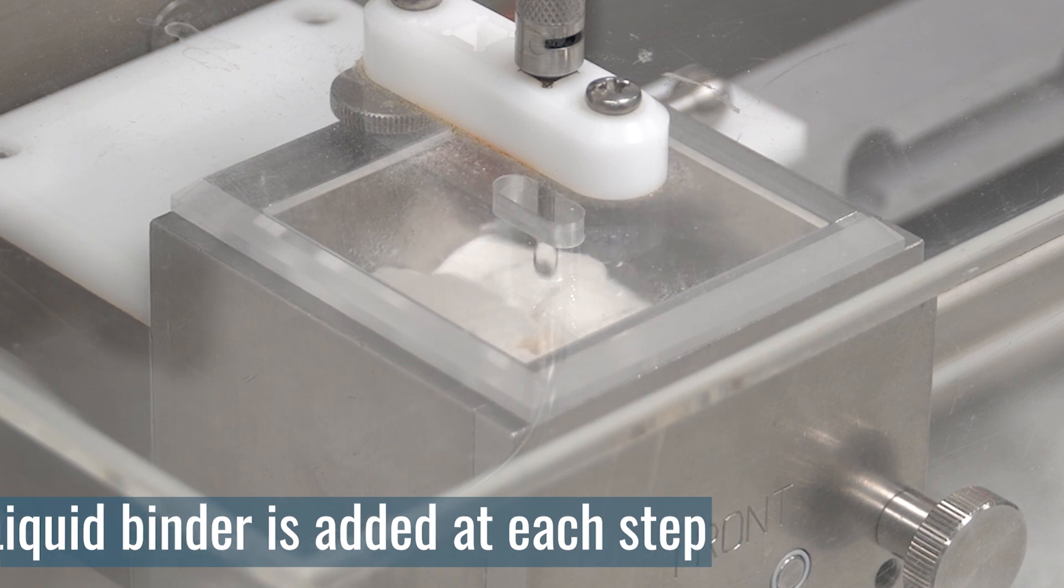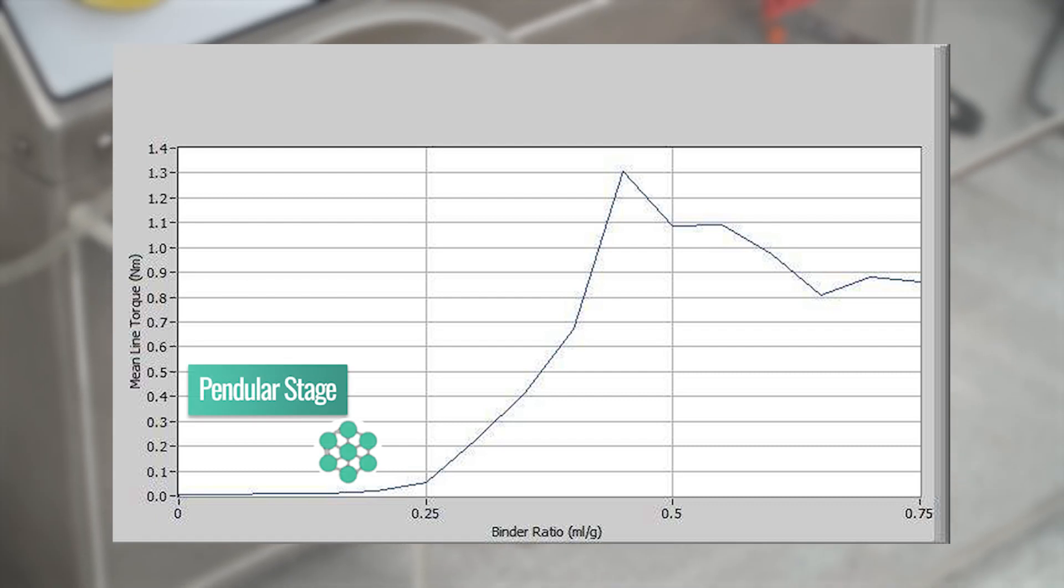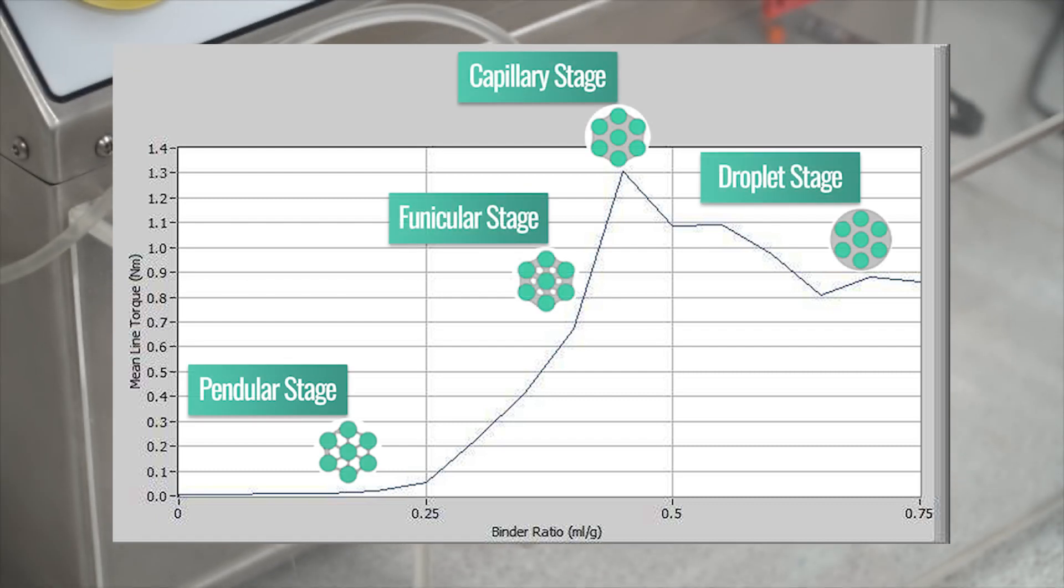As more binder is added to your material, the amount of torque generated inside of the bowl increases until it reaches a peak level of torque, before declining as the material in the bowl becomes oversaturated, turning into a slurry.